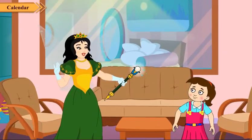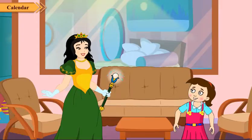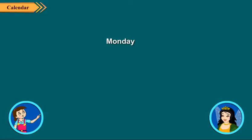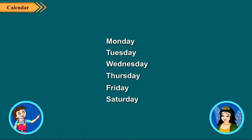What other things do you know about a week? There are seven days in a week. These are Monday, Tuesday, Wednesday, Thursday, Friday, Saturday and Sunday.